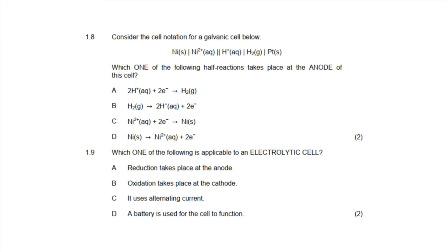Question 1.8 asks which half-reaction takes place at the anode of the galvanic cell shown. The anode of a galvanic cell is the electrode with greater reducing ability. From the table of standard reduction potentials, nickel has the greater reducing ability, so nickel undergoes oxidation at the anode — solid nickel breaks apart into nickel ions and two electrons. The correct answer to 1.8 is D.